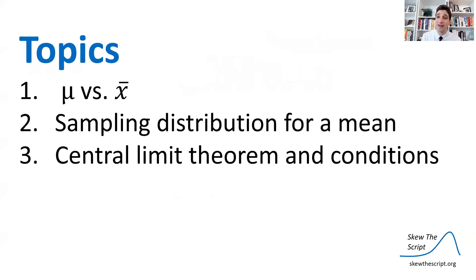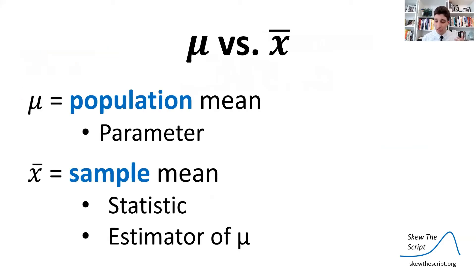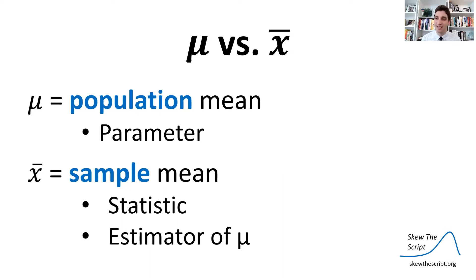In order to analyze this topic, we first need to talk about the population mean versus the sample mean. When you see mu, that means the population mean — it's a parameter, the mean among the whole population. X-bar represents the sample mean. It's a statistic measuring the mean among a sample drawn from the population. You can use the sample mean to estimate the true population mean.